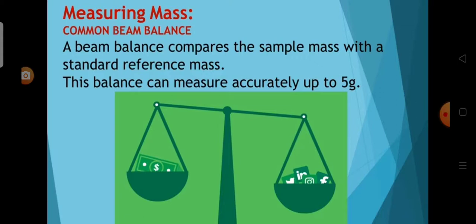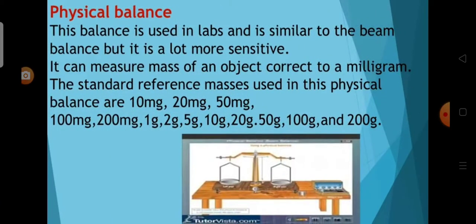Now we will see some of the instruments for measuring mass. First, the common beam balance compares a sample mass with a standard reference mass. This balance can measure accurately up to 5 grams. Next is the Physical Balance, used in labs, similar to the beam balance but more sensitive. It can measure the mass of an object correct to the milligram. The standard reference masses used are 10 mg, 20 mg, 50 mg, 100 mg, 200 mg, 1 g, 2 g, 5 g, 10 g, 20 g, 50 g, 100 g, and 200 g.